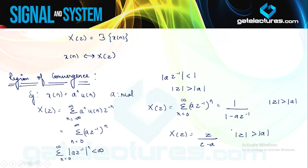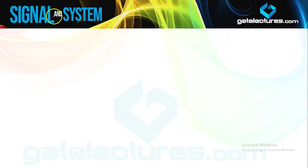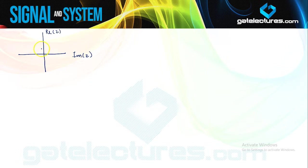This is the ROC of this system. When we try to draw this ROC using a diagram, since Z is represented in polar form, whenever we talk about |Z|, it takes the form of a circle. So if I try to draw the ROC for this signal, it is defined in terms of circles. This is the imaginary part, and this is the real part. For reference, we take a unit circle, where |Z| equals 1.